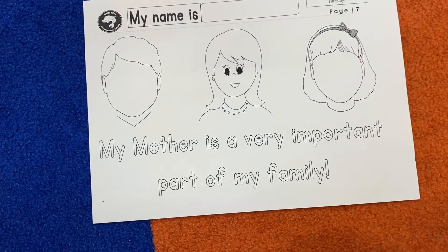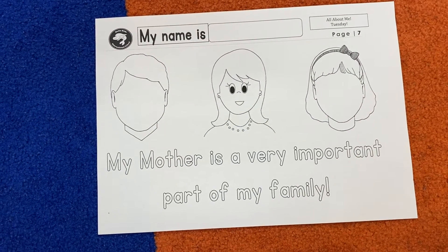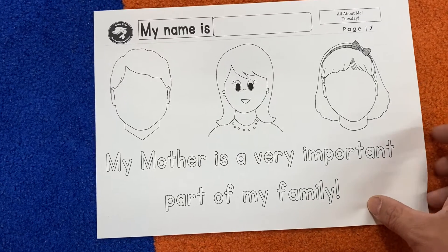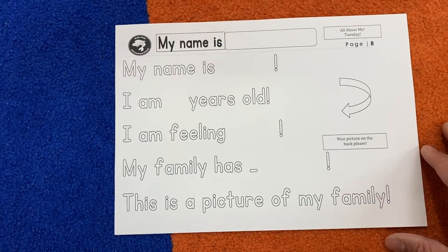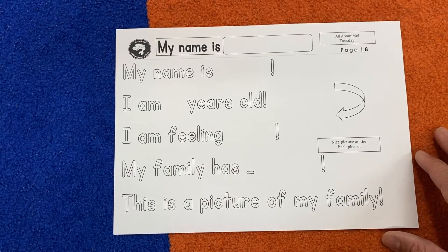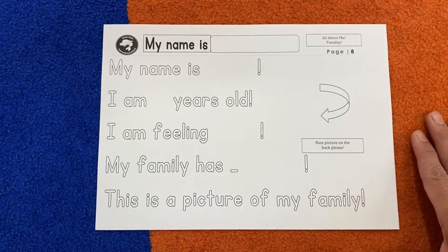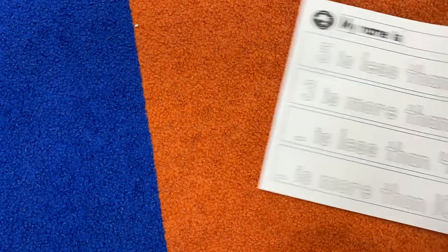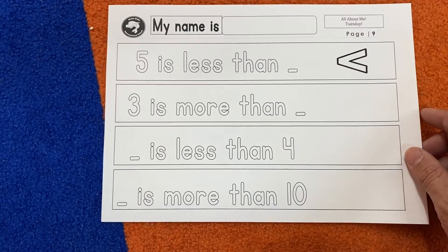Speaking of father, let's go back and talk about mother. Read the sentence and draw the correct picture. This is the same as yesterday, actually. Numbers seven, eight, and nine are the same as yesterday because the kids coming on Tuesday are not coming on Monday. You have to fill out this one, and then on the back draw your picture.